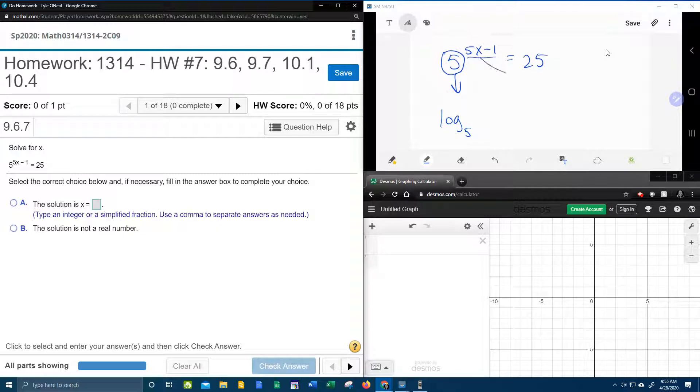Bring the base down, switch the other two around. So that becomes 25 equals 5x minus 1.